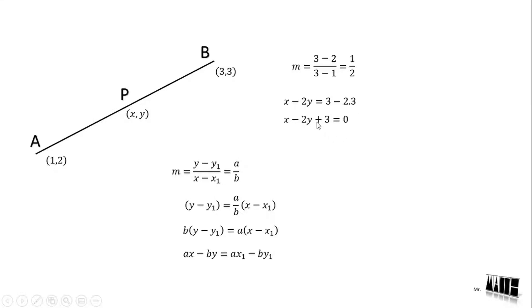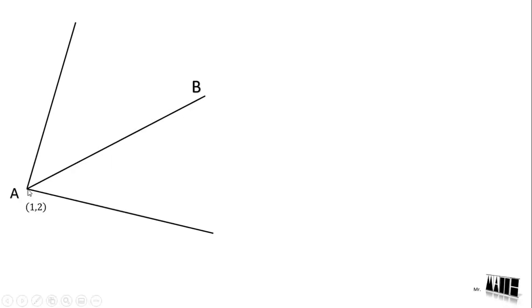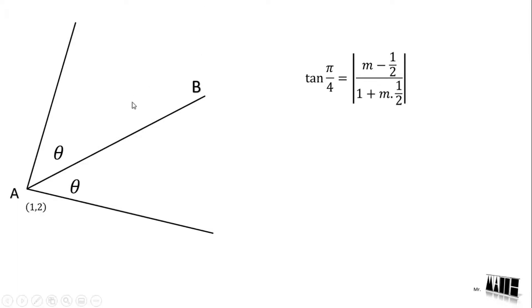So we have to answer the question. The answer involves finding the slope. We take the slope m, so we take AB to get the equation.